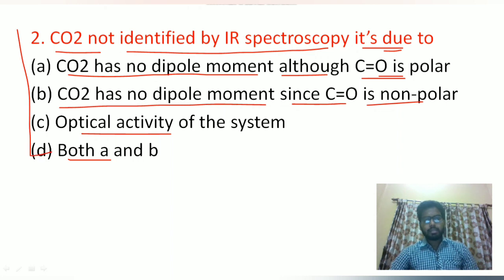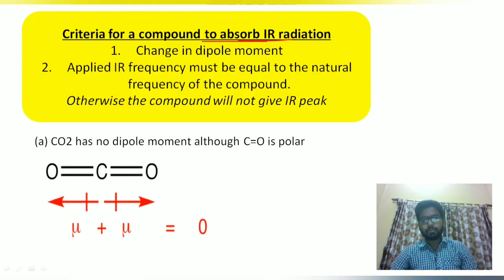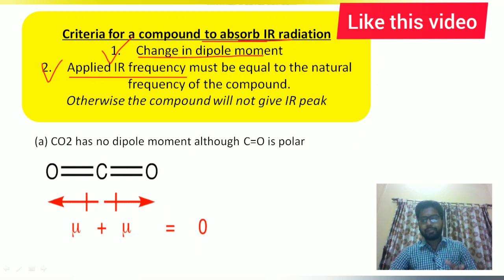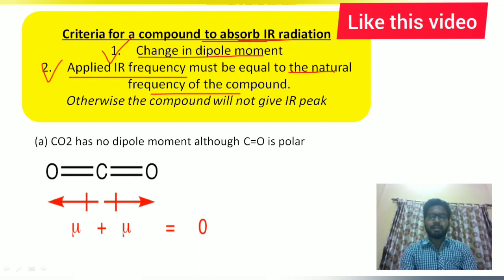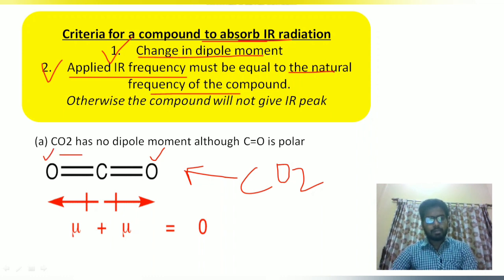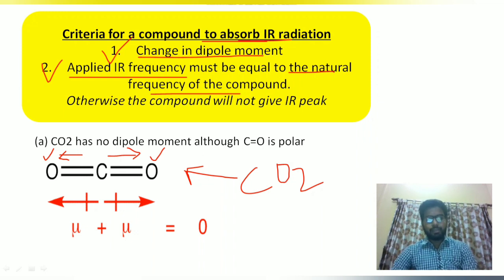For a compound to absorb IR radiation, it must have a change in dipole moment, and the applied IR frequency must equal the natural frequency of the compound. In CO2, the two oxygen atoms attract electrons towards them symmetrically, so the net dipole moment is zero, even though individual CO bonds are polar.